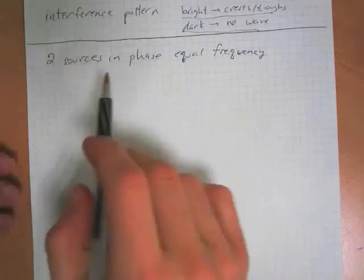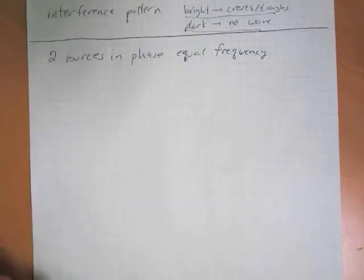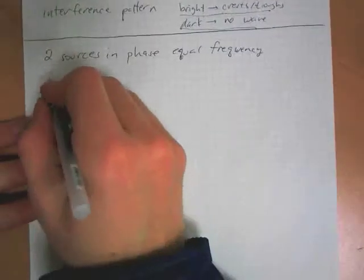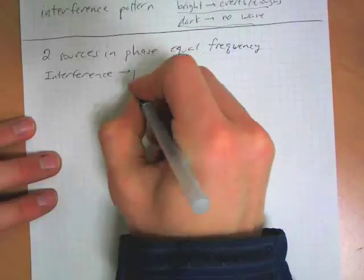But if two sources have equal, they're in phase with equal frequency, then the interference, type of interference, has to do with path length.